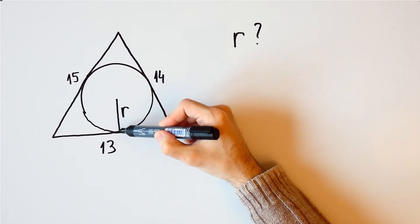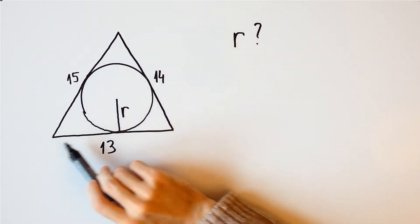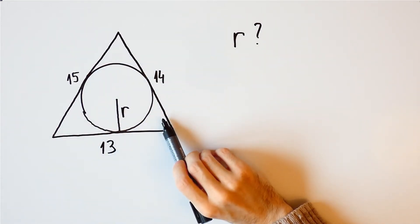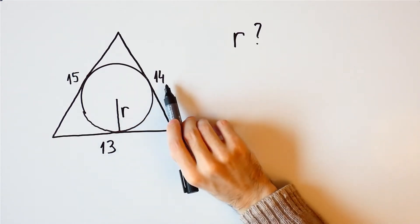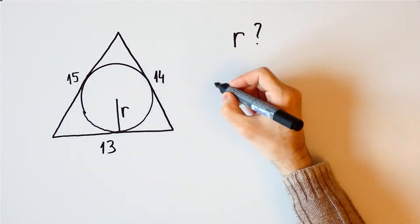Suppose that we want to find the radius of the inscribed circle of this triangle. In the previous video we showed that the area of a triangle whose sides are 13, 14 and 15 is equal to 84.